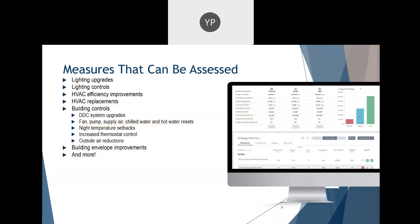Here is an example of the different measures that can be assessed through a virtual assessment. Of course, there is the usual low-hanging fruit of lighting, LED upgrades, and lighting controls. Since this is a whole building energy model, we are also able to analyze ECMs such as HVAC efficiency improvements, HVAC controls, DDC system upgrades, fan and pump supply air and hot water resets, outside air reductions, building envelope strategies, and a lot more.